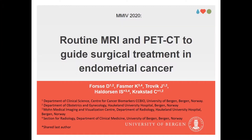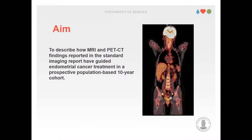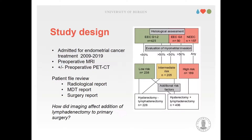Routine MRI and PET-CT to guide surgical treatment in endometrial cancer. Aim: to describe how MRI and PET-CT findings reported in the standard imaging report have guided endometrial cancer treatment in a prospective, population-based 10-year cohort. Study design: we included patients admitted for endometrial cancer treatment from 2009 to 2019 that had undergone preoperative MRI and in most cases a preoperative PET-CT. We performed a patient file review to answer the question of how imaging affected the addition of lymphadenectomy to primary surgery.